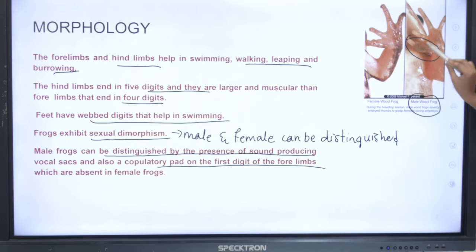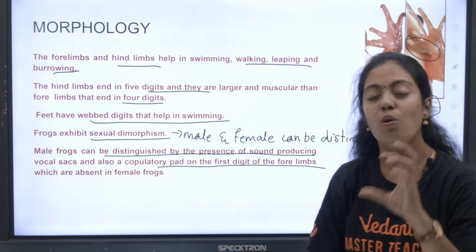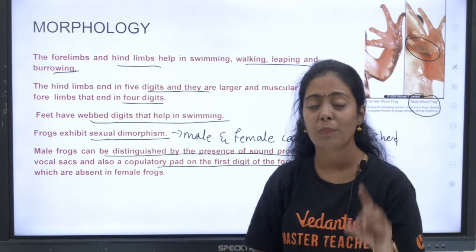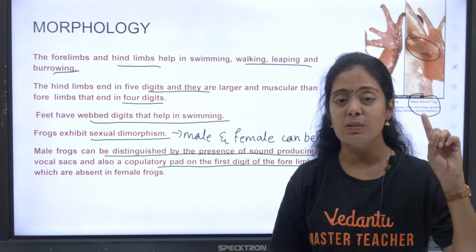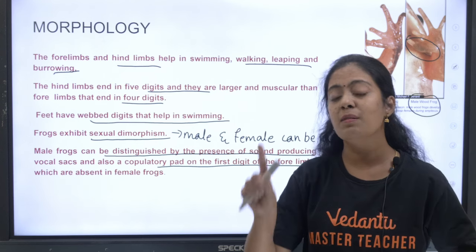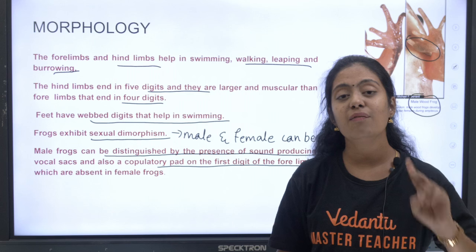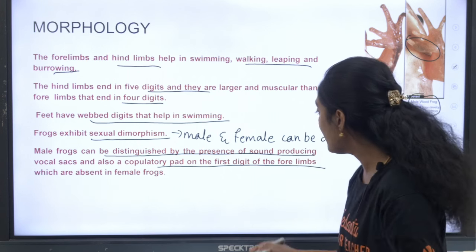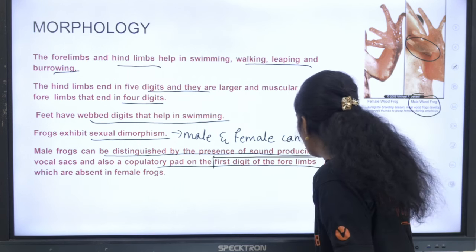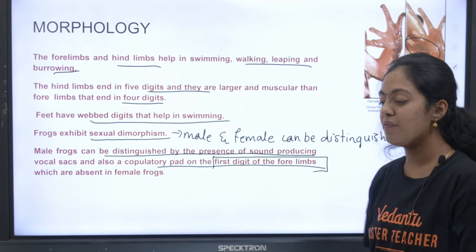The female frog does not have a copulatory pad on the first digit. So the two main differences: male frogs have vocal sacs (female frogs do not), and male frogs have a copulatory pad on the first digit of the forelimb (absent in females).